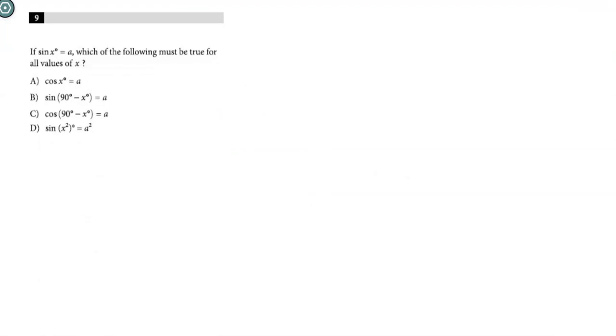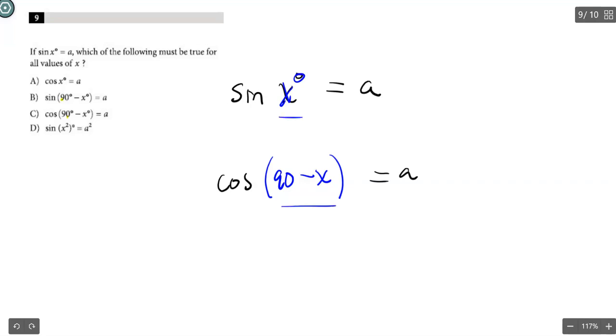Number 9, sine of x equals a. What must be true for the values of x? I'm looking through, and immediately I start seeing these 90 minuses, so I'm thinking complements. If the sine of x is a, I know that the cosine of 90 minus that x is also going to be a. The sine of some angle and the cosine of his complement are going to come out to be the same. So it looks like the correct answer here is going to be C.